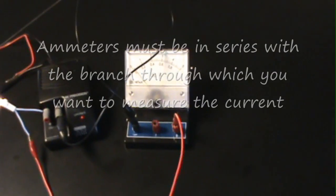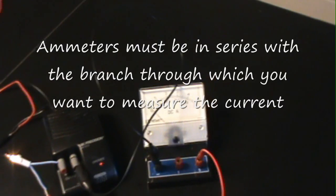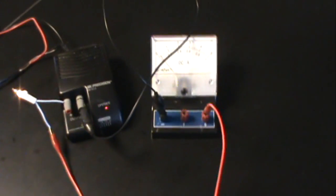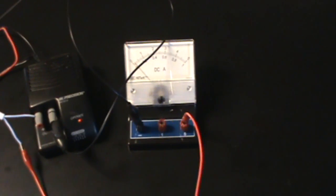Okay, so that is the key that we want to see here. Ammeters go in series, they measure the current through a branch of a circuit. In this very simple series circuit, we have only one branch, so there isn't a whole lot of variation.